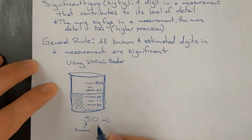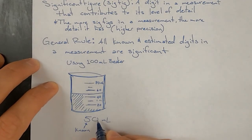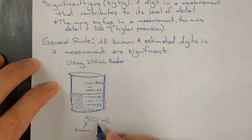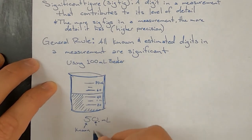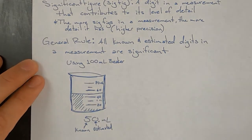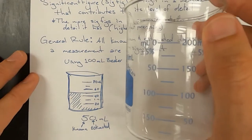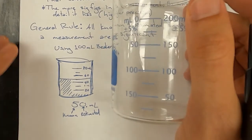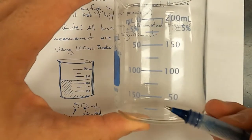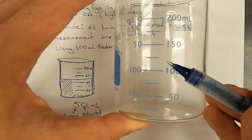To show that the zero was the estimated digit and not the five, a decimal point would go after it. We're going to contrast that with 50 milliliters of water measured in a 250 milliliter beaker. The 250 milliliter beaker has markings only for every 25 milliliters.